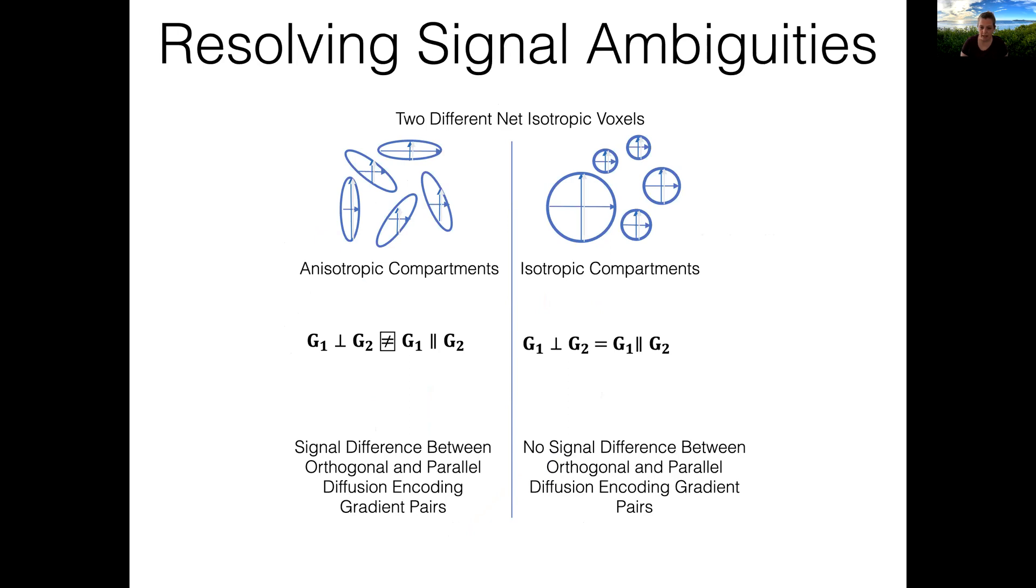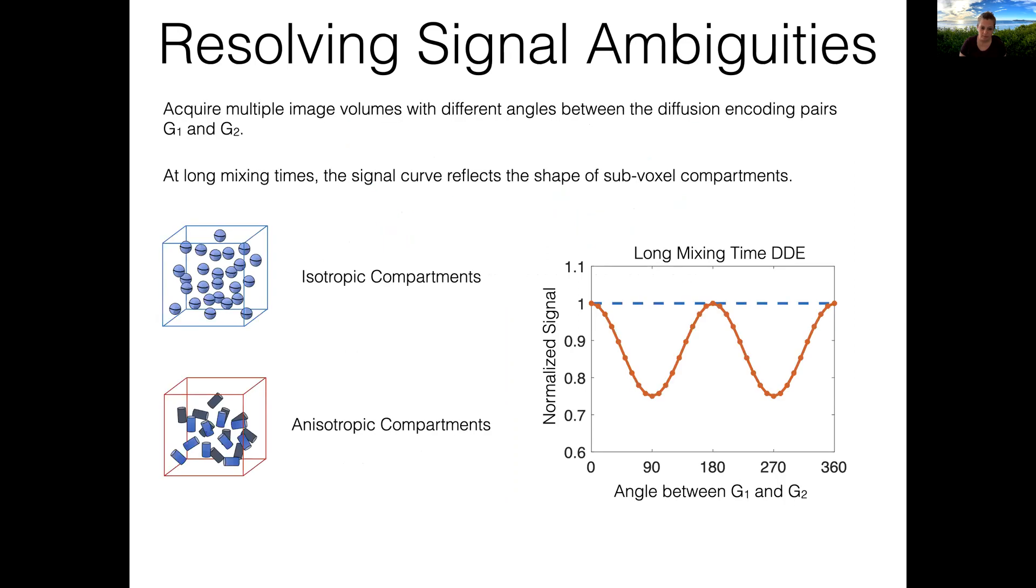To provide some intuition for how double diffusion encoding provides information about compartment shape, even when the compartments are not coherently aligned, we can look at this simple example. For the anisotropic compartments, encoding along perpendicular orientations will not yield the same result compared to encoding along parallel orientations, whereas these two cases will be equivalent for the isotropic compartments. If we acquire multiple image volumes with different angles between the diffusion encoding pairs, at long mixing times, the signal curve produced across the different angles will reflect the shape of the subvoxel compartments.